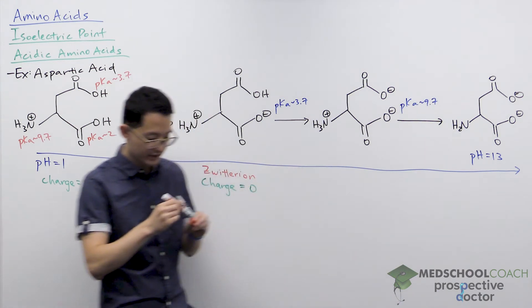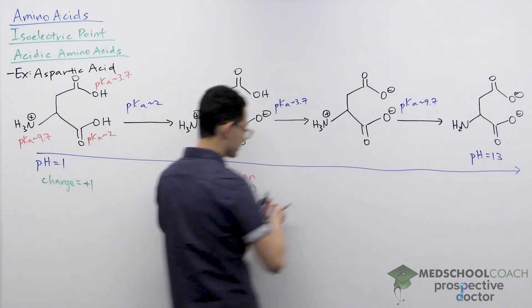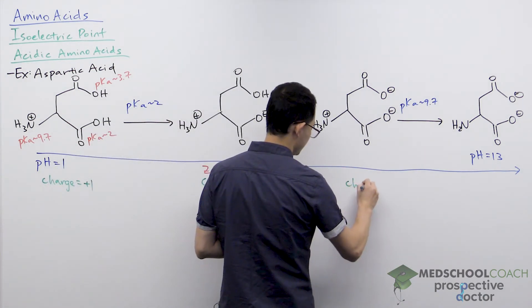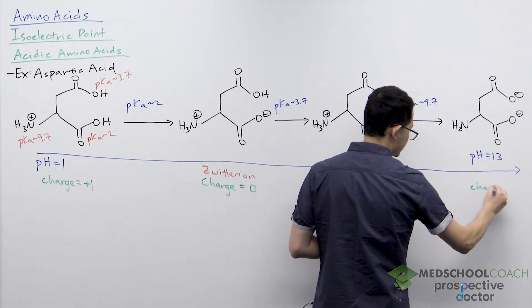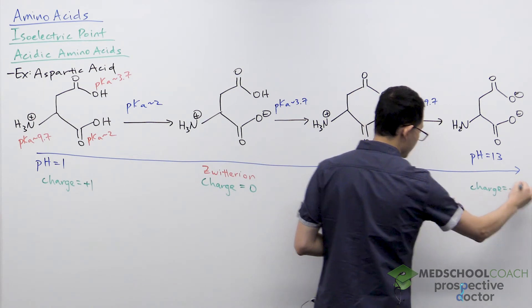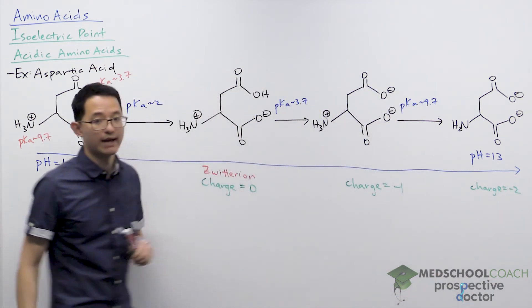Continuing, this molecule here has two minus one charges and a plus one charge, so its charge is minus one. And this last molecule only has two minus one charges, so its charge is minus two.